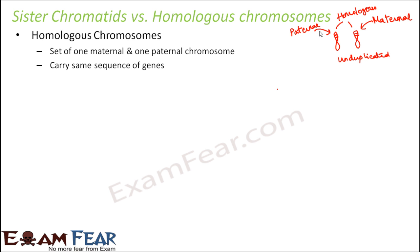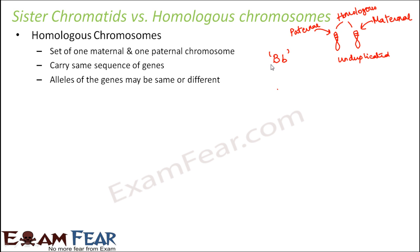Homologous chromosomes carry the same sequence of genes — whichever gene is present at whichever location on one chromosome, the same sequence must be present on the homologous chromosome. The alleles of the genes may be the same or different. For example, B may stand for black hair and small b for brown hair. So the alleles can carry the same value on both maternal and paternal chromosomes, or they can be different.